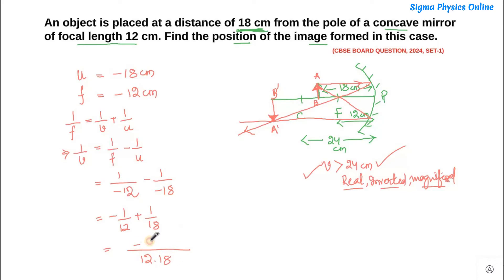So 12, 12 gets cancelled, it's minus 18 plus 18, 18 gets cancelled, it's plus 12. So our image distance 1 by v is minus 6 by 12 into 18, which is minus 1 by 36. So this implies the image distance is minus 36 cm.